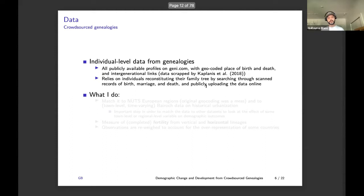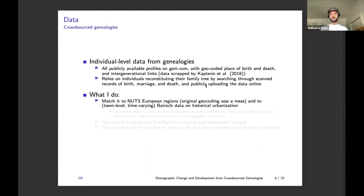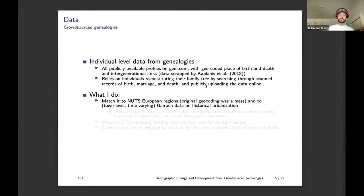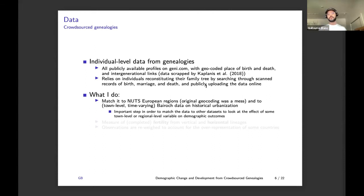What I do: first, I match it to current European regions, because the original geocoding was a huge mess. Importantly, I also match it to town-level time-varying Bairoch data on historical urbanization, because this is simply the best available proxy measure of development at a very granular level, available comprehensively over time and space in Europe during that period. This is an important step to match the data to other datasets and look at the effect of town-level or regional-level variables on demographic outcomes.